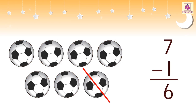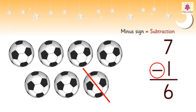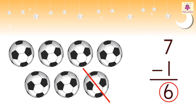We are actually subtracting one from seven. That is, seven minus one is equal to six. The minus sign is the symbol used for denoting subtraction, and the answer obtained is called the difference.